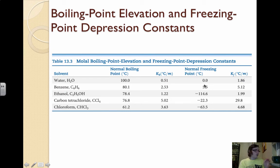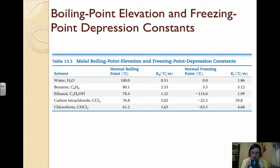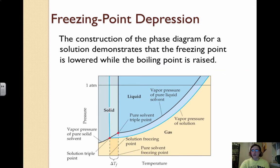For water specifically, you need to know that it freezes at zero degrees Celsius and boils at 100 degrees Celsius. This phase diagram shows what happens when vapor pressure is lowered, and how the solution's freezing point is actually below the pure solvent's freezing point.